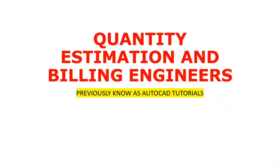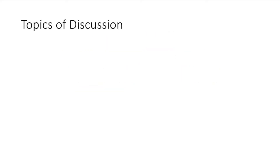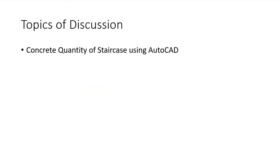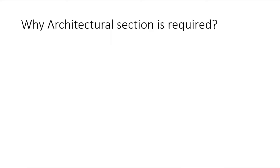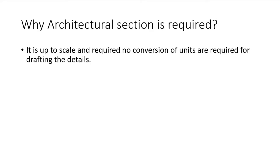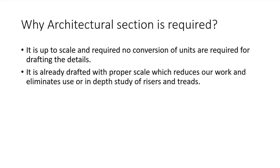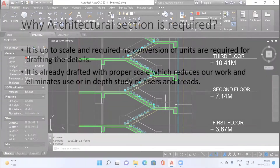Hello and welcome back to Quantity Estimation and Billing Engineers, previously known as AutoCAD Tutorials. In today's session, we are going to see how we can calculate concrete quantity of staircase and BBS of staircase. To begin with the concrete quantity, we will refer to our architectural section of staircase. The main reason is the architectural section is as per our scale and we will get correct data of our riser and treads. We don't have to refer architectural plan — the only thing we require is the architectural section where we will get our complete details.